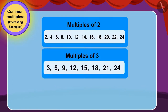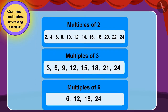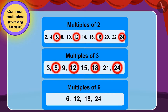The stones on which the three friends would jump are common multiples of two, three, and six. In this case, these are six, twelve, eighteen, and twenty-four. There are four stones on which the three friends would jump. Therefore, in this option, the three friends could not cross the marsh successfully.